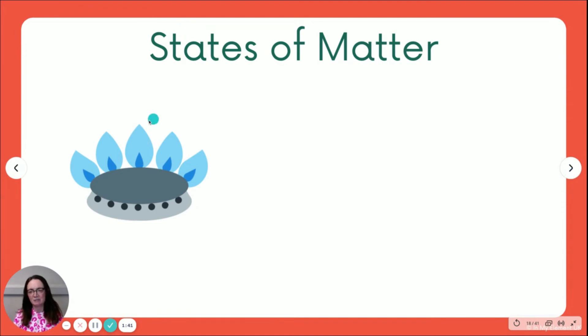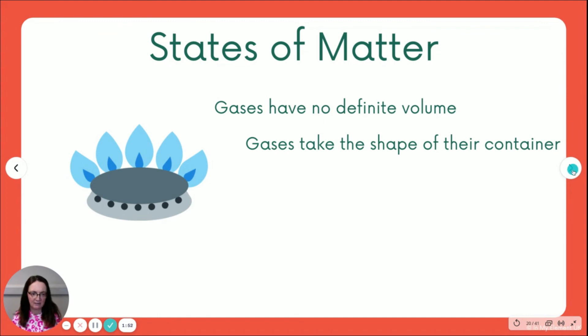Then for gases, obviously we're talking about this bit here. This is the gas because this is solid, this is the metal of a hob. They have no definite volume and they will take the shape of their container.